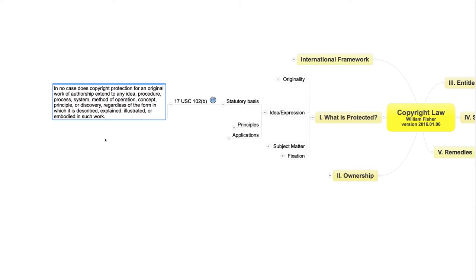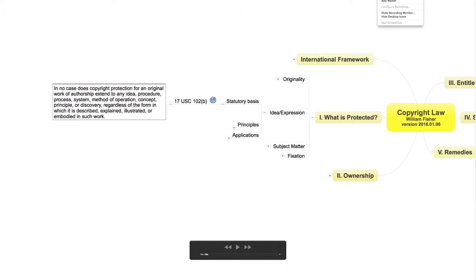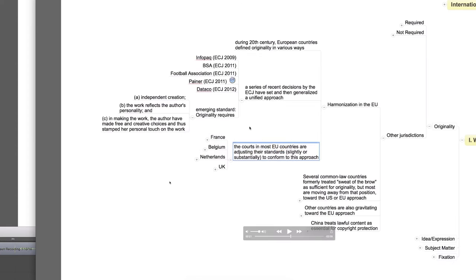In the Eldred case, which we'll consider in detail in a subsequent lecture, the United States Supreme Court suggested that the idea-expression distinction is necessary in order to reconcile copyright law with the principle of freedom of speech embodied in the First Amendment of the U.S. Constitution. Lots of other examples of this distinction can be found in the law of other countries.